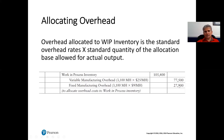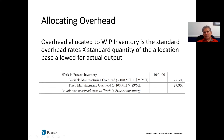Overhead is allocated to work in process: overhead allocated equals the standard cost overhead rates times the standard quantity of the allocation base allowed for actual output. Variable MOH allocation: 3,100 machine hours × $25 = $77,500 credited. Fixed MOH allocation: 3,100 machine hours × $9 = $27,900 credited. Work in process is debited for the total of $105,400.